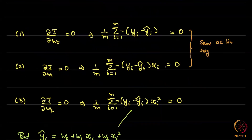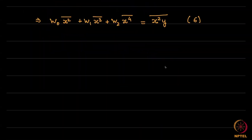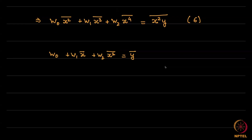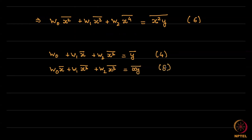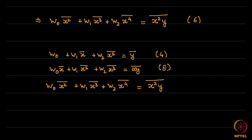Equation 4 corresponds to the first normal equation: w₀ + w₁·x̄ + w₂·⟨x²⟩ = ȳ. Equation 5 is: w₀·x̄ + w₁·⟨x²⟩ + w₂·⟨x³⟩ = ⟨xy⟩. And equation 6 is: w₀·⟨x²⟩ + w₁·⟨x³⟩ + w₂·⟨x⁴⟩ = ⟨x²y⟩.